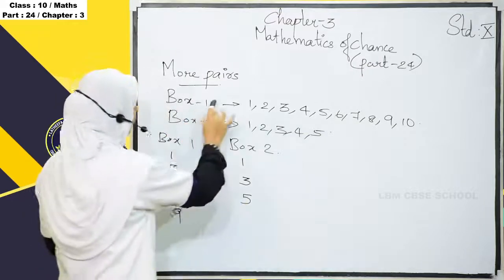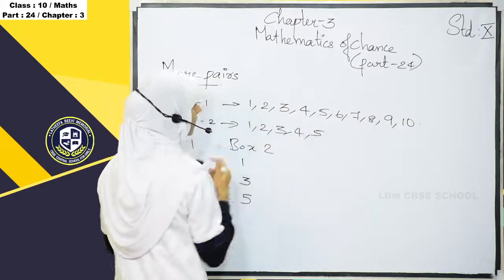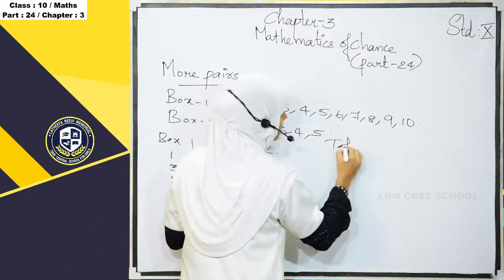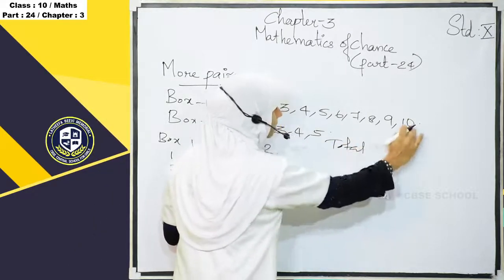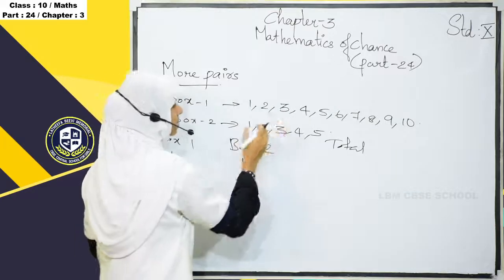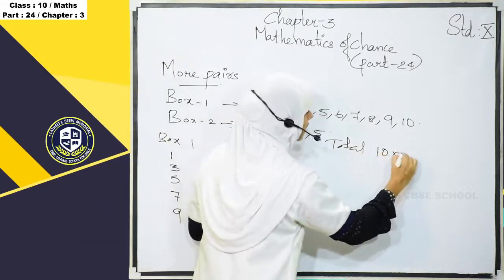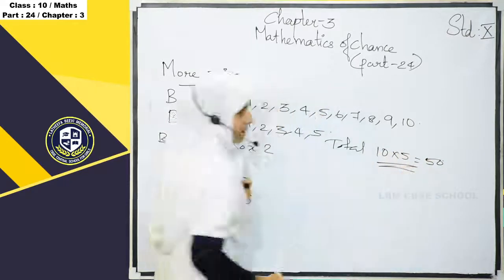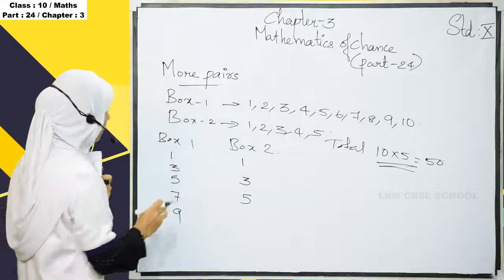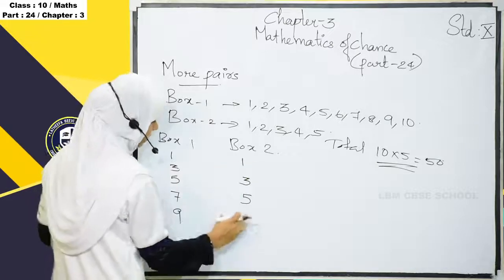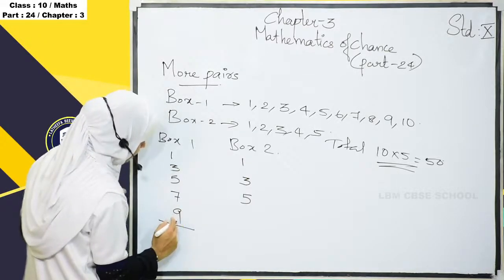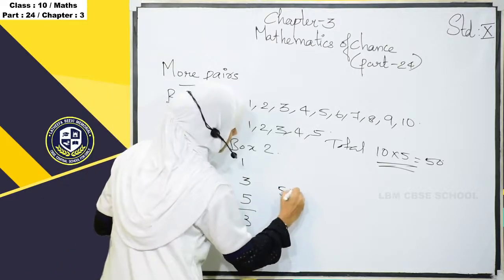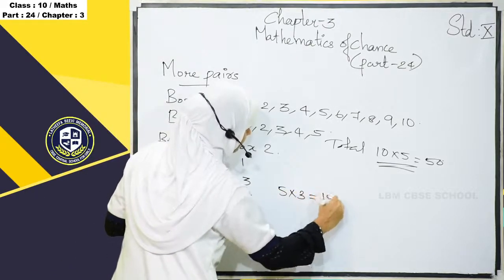The total pairs from both boxes: here we have 10 slips and here we have 5 slips, so 10 into 5 is equal to 50 total pairs. For the odd pairs, from Box 1 we have 5 odd numbers and from Box 2 we have 3 odd numbers, so 5 into 3 is 15 odd pairs.